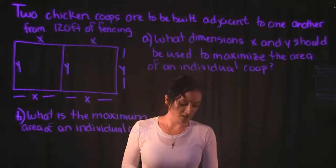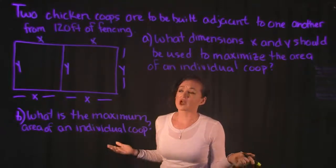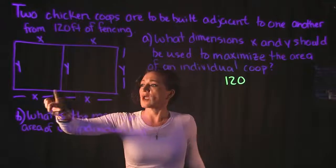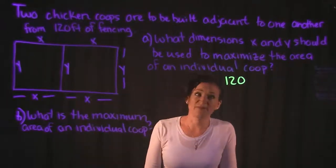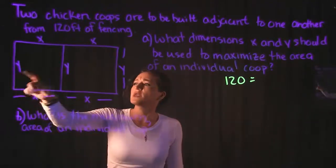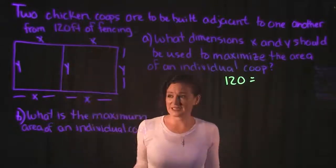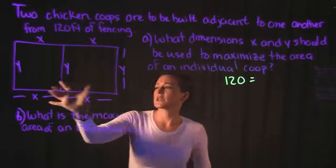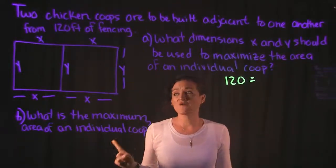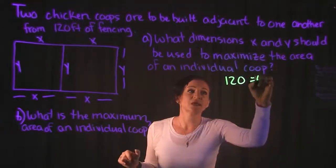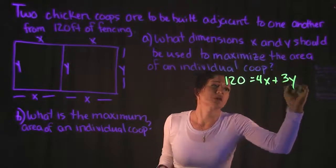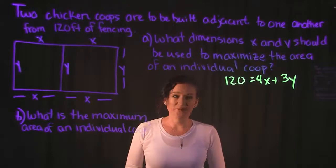This helps us create our formulas for perimeter and area. For perimeter, we have a total of 120 feet of fencing, so 120 feet must equal all of these dimensions. Counting them up, we have one, two, three Y's and one, two, three, four X's. So 120 is equal to four X plus three Y. That's our perimeter equation.